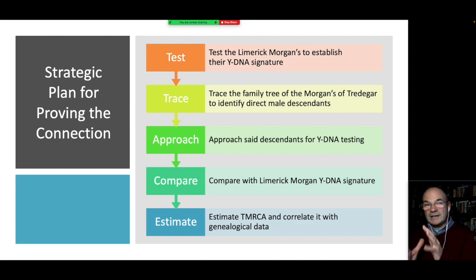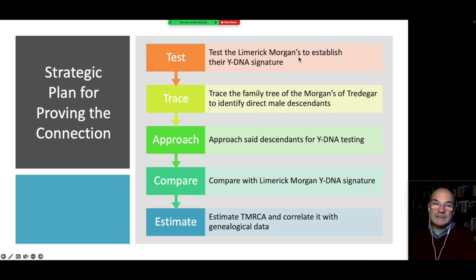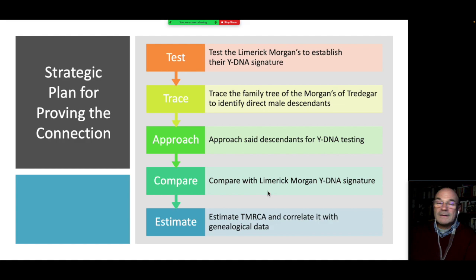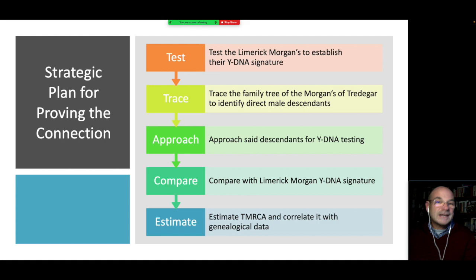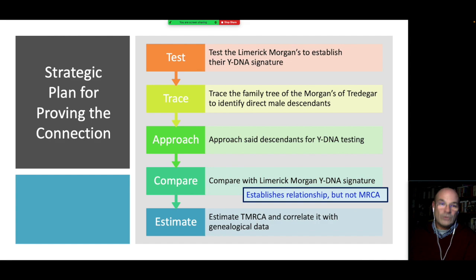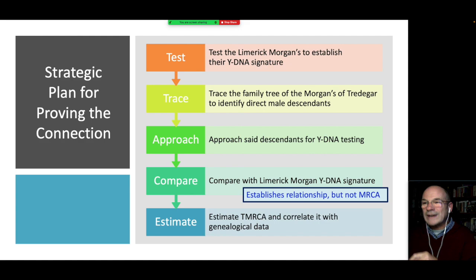My strategy for proving the connection between the Limerick Morgans and the Morgans of Tredegar was: firstly, test the Limerick Morgans to establish their Y-DNA signature; then trace the family tree of the Morgans of Tredegar to identify direct male descendants; approach those descendants for Y-DNA testing; compare them with the Limerick Morgan Y-DNA signature; and see if the time to most recent common ancestor — the age estimates for when we were supposed to connect — correlates with the genealogical data. If there was a match between the two signatures, it would confirm a connection, though it would not necessarily identify the most recent common ancestor.